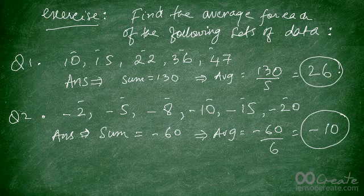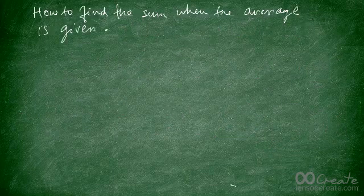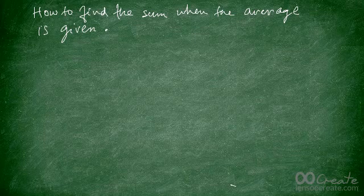All you have to do to find the average of a set of data is to add up all the values and divide by the number of terms. Now we're going to learn how to find the sum of a set of data when the average is already given to you.